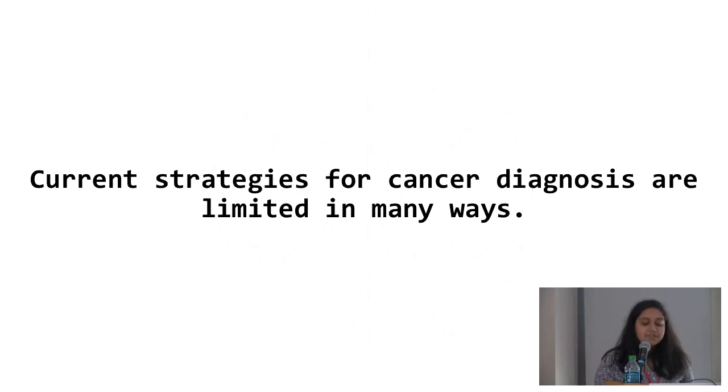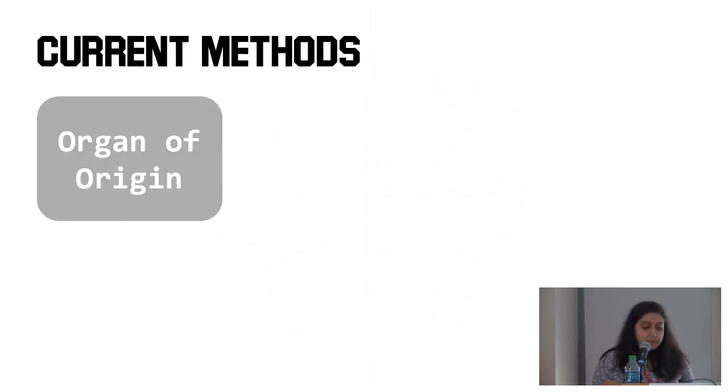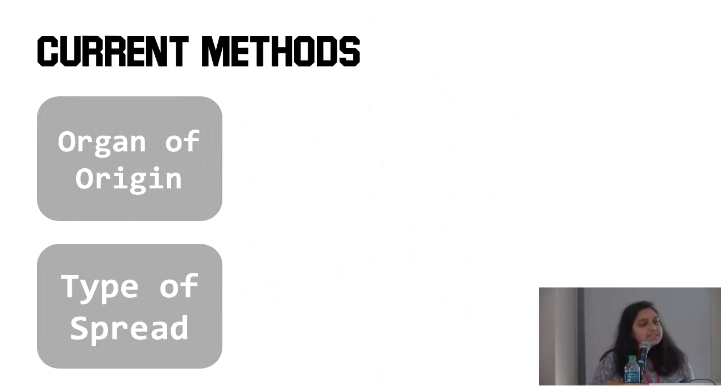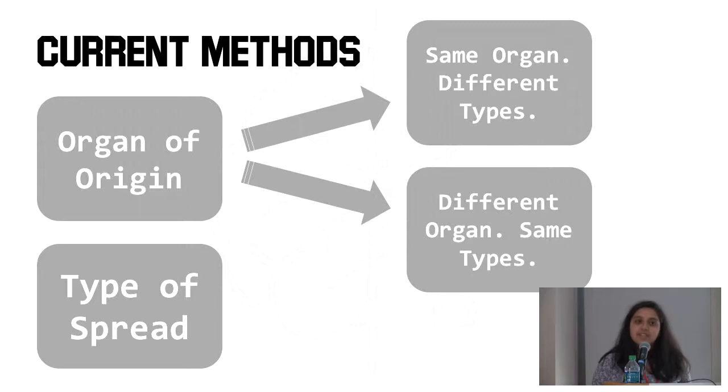So to get into my talk. The problem. Current strategies for cancer diagnosis are limited in many ways. Although we've made a lot of progress in the way that we choose to diagnose and treat cancer, there's still a lot of gaps, especially with two of the current methods by organ of origin and type of spread. Organ of origin specifically has two big problems in that the same organ can have different types of cancer, and different organs can have similar types of cancer.